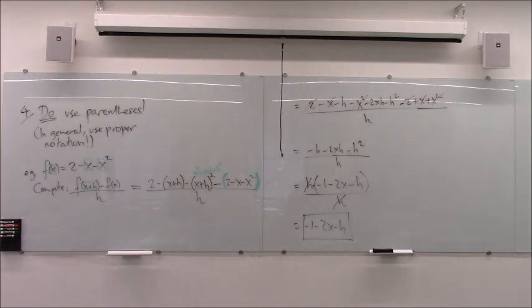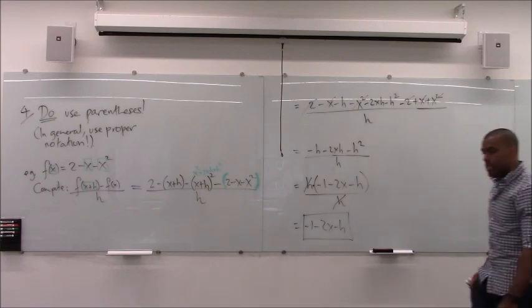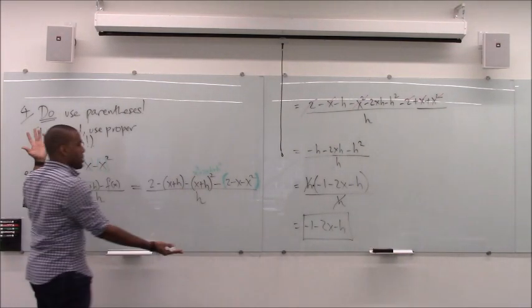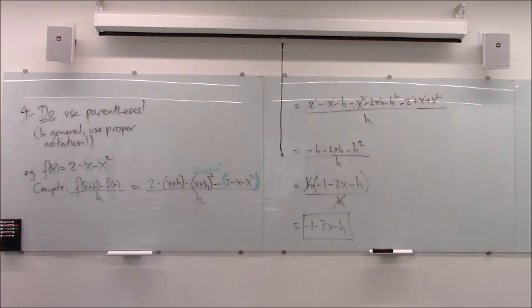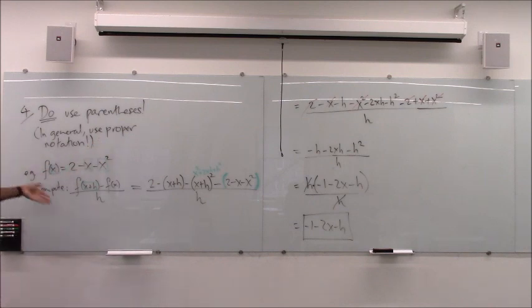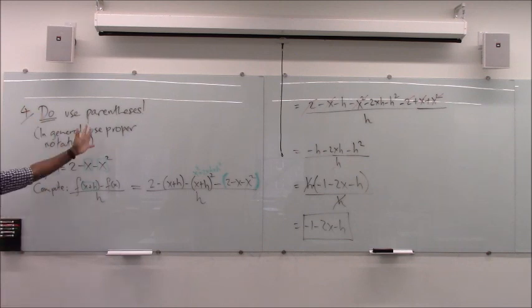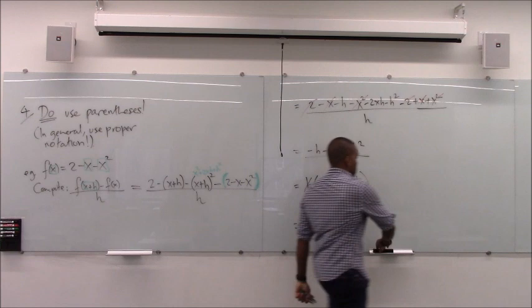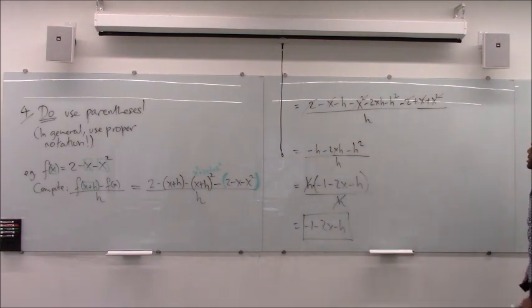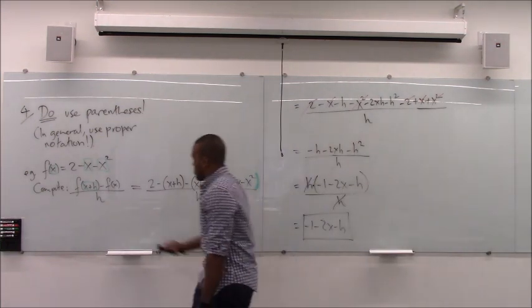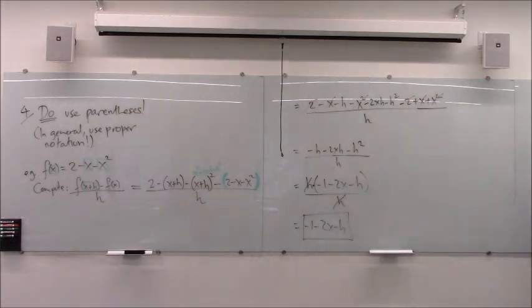I went through the painstaking process of showing you these mistakes because they're very important. If you make any of the first three blasphemies — canceling across sums, distributing powers across sums, or dividing by zero — I will give you a zero for that problem. I won't read anything further. If I see you cancel across a sum, the problem gets a zero. Obey these rules.